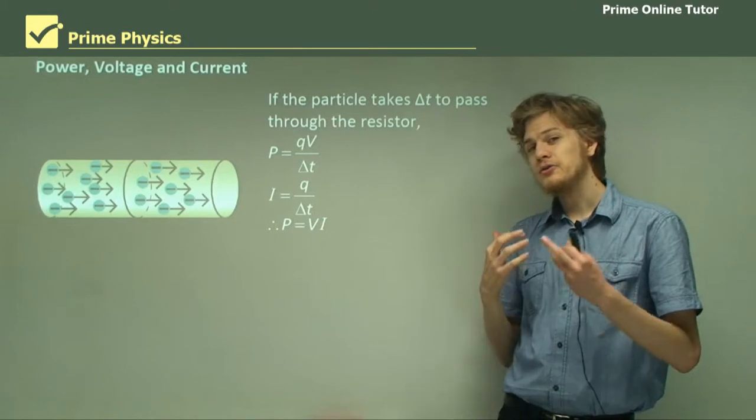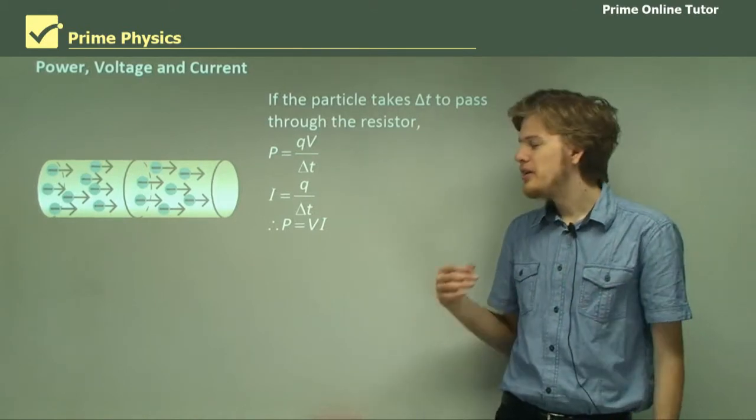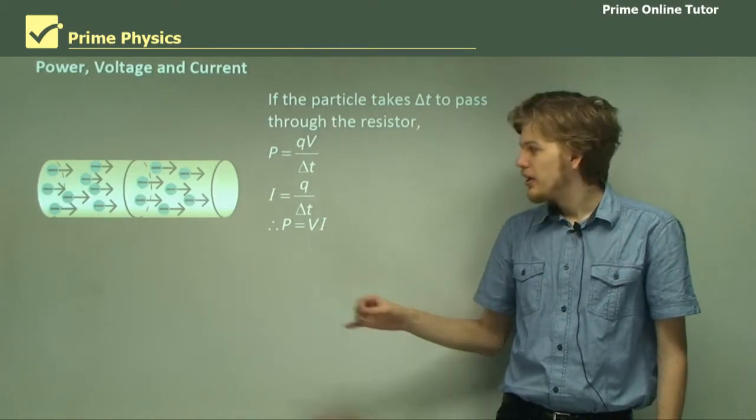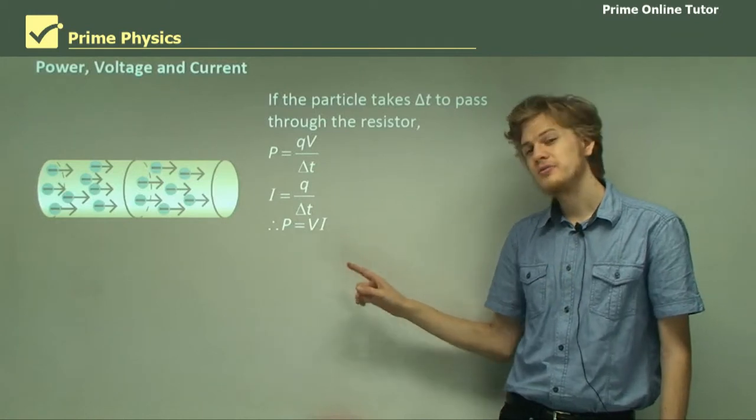That is, the amount of heat energy radiated by a resistor equals the voltage across it times the current through it.